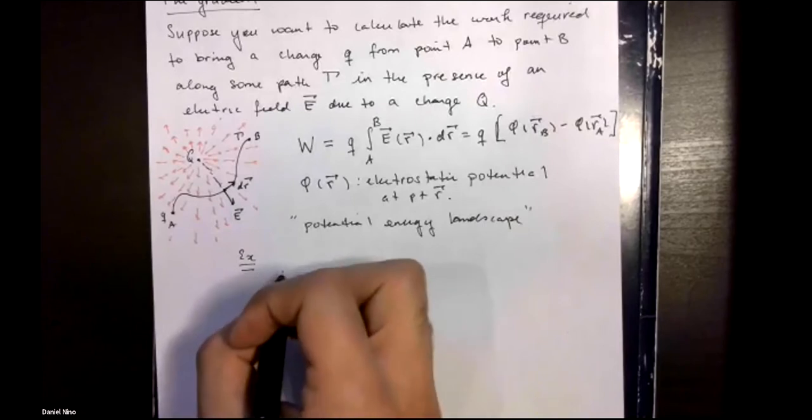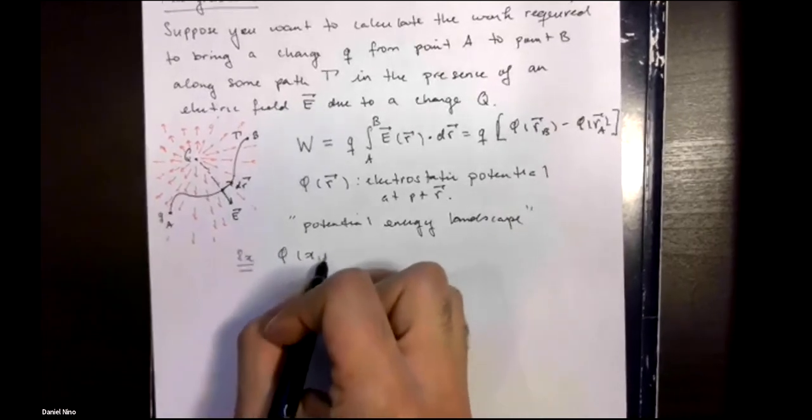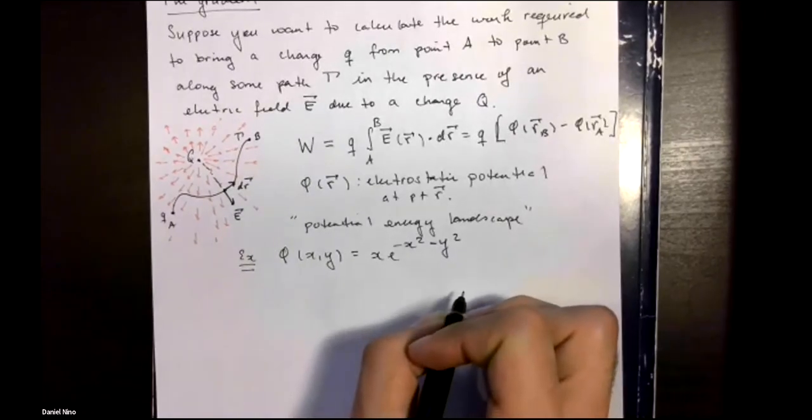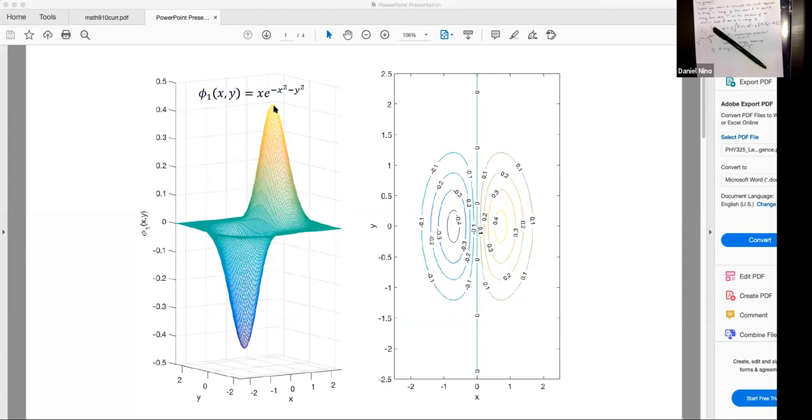And as an example of this we're going to consider the following electrostatic potential. If you plot this electric function in three dimensions with x and y you get something that looks like this, so you have a potential energy well and what looks like a potential energy hill. And a common way of representing this is with this graph which is called the contour plot, and each one of these lines represents what's called an equipotential. All along any one of these curves our potential energy in this context is constant. So as long as you stay along this curve your potential energy will always be, for example, minus 0.3 volts.